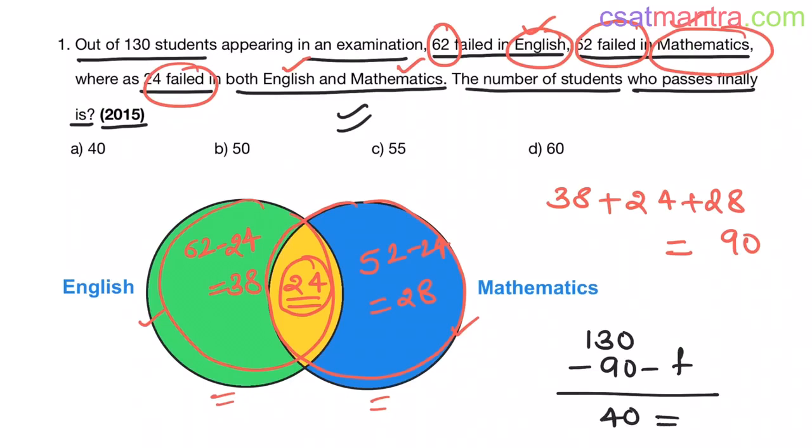So, number of students who passes finally is 40. So, A is your answer.